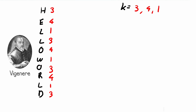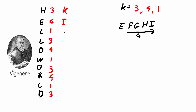It's just a matter of shifting each letter by its corresponding key. So h shifted right by 3 becomes k. The letter e shifted right by 4 goes e, f, g, h, i — so e becomes i. The letter l shifted forward by 1 becomes m. The next l shifted forward by 3 becomes o. Notice this is the advantage over the Caesar cipher: even though we have the same character l twice, it gives different outputs — m and o. Continuing: o shifted by 4 becomes s, w becomes x, the next o becomes r, r becomes v, and so on.